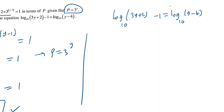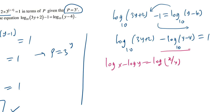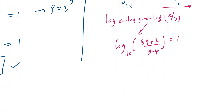I'm going to take terms to the other side. So you have log(3y + 2 + 10) − log(y − 4 + 10) = 1. By using the laws of logarithms — log(x) − log(y) = log(x/y) — this simplifies to log((3y + 2)/(y − 4) + 10) = 1.